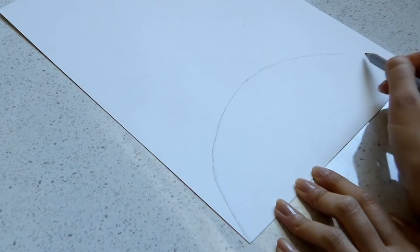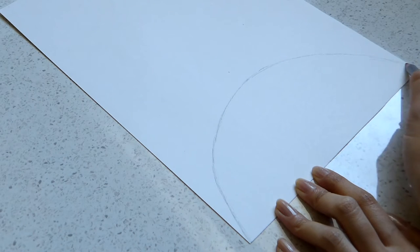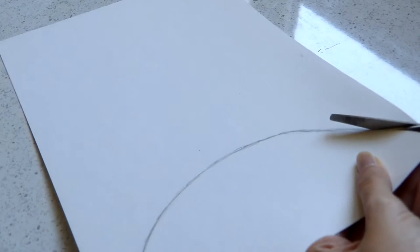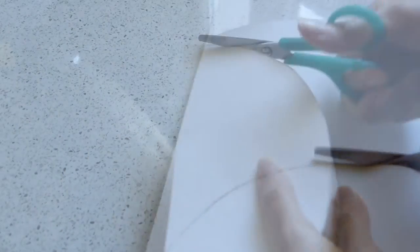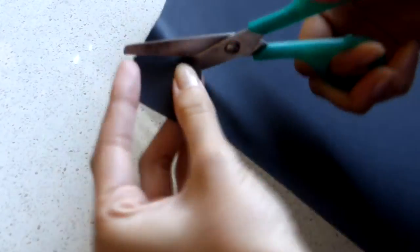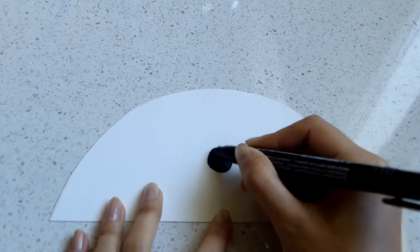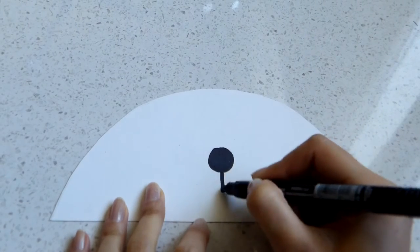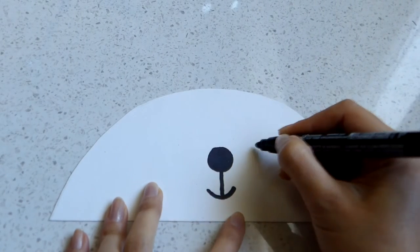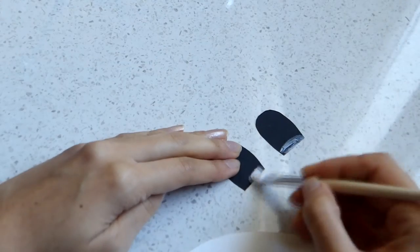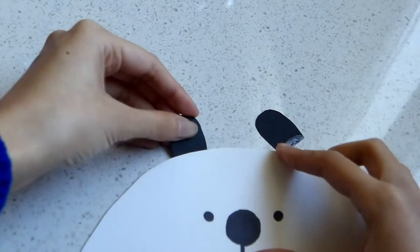Now grab the white paper and draw a sort of semicircle to make the head of the panda. Cut the semicircle out. I also cut out some ears from a black paper. Now you can go ahead and draw the panda's face with a black marker. Finally, attach the ears with some glue.